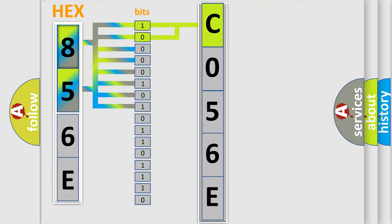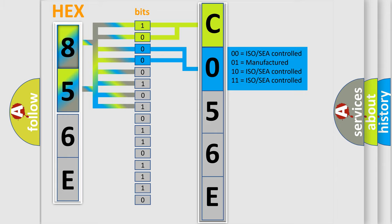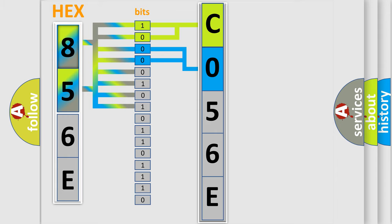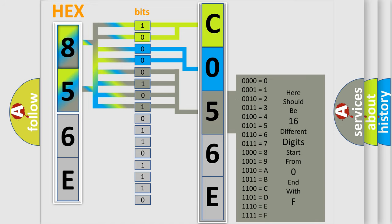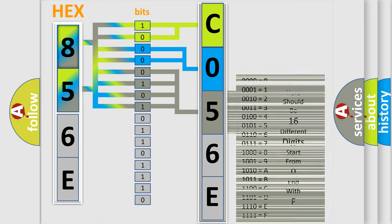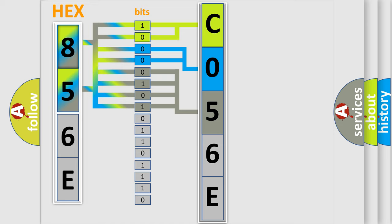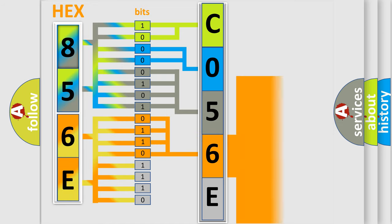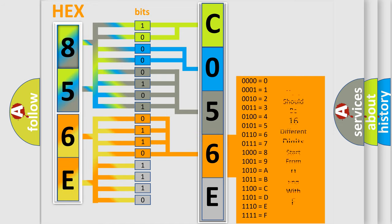The next two bits determine the second character. The last four bits of the first byte define the third character of the code. The second byte is composed of a combination of eight bits: the first four bits determine the fourth character of the code, and the combination of the last four bits defines the fifth character.